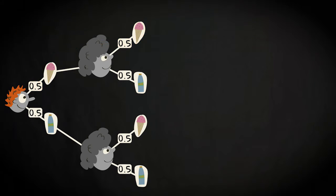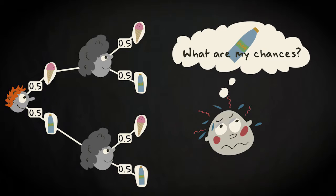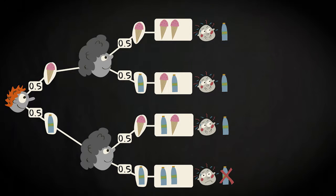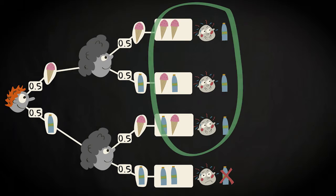Starting at the other end, you might ask yourself what are the chances that after two customers there would still be at least one bottle of soft drink left. Here, the event of interest consists of these three branches.